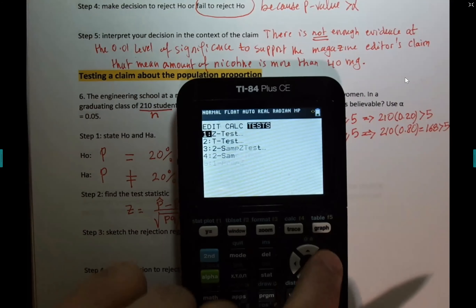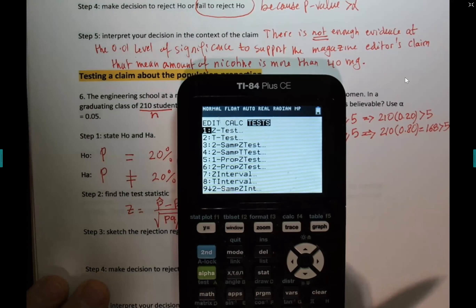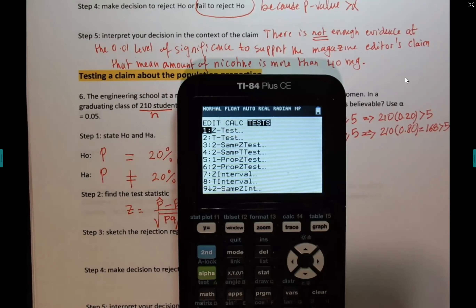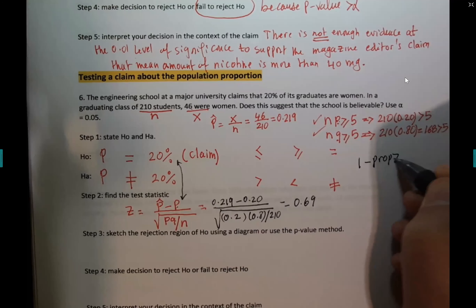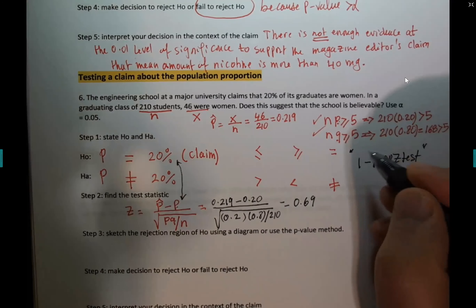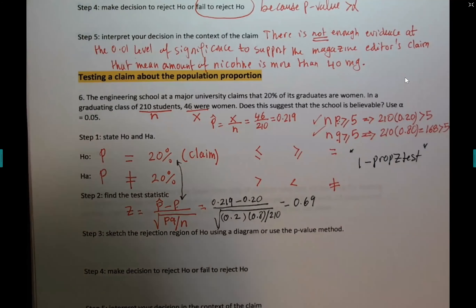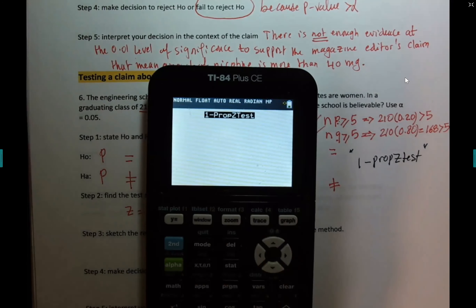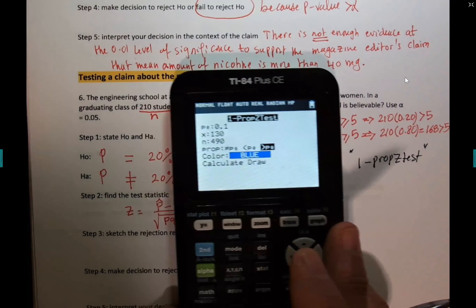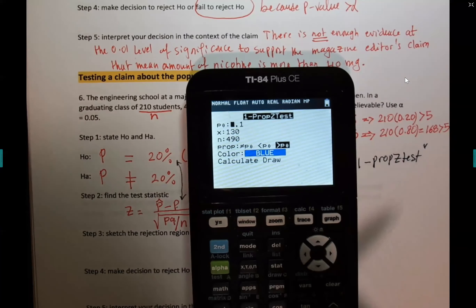The proportion z-test is number 5 on the calculator — 1-PropZTest. For proportions there's no confusion whether to use z or t; it's always z. It's asking for p0 — the null hypothesis value — I put 0.20. x is 46 and n is 210.